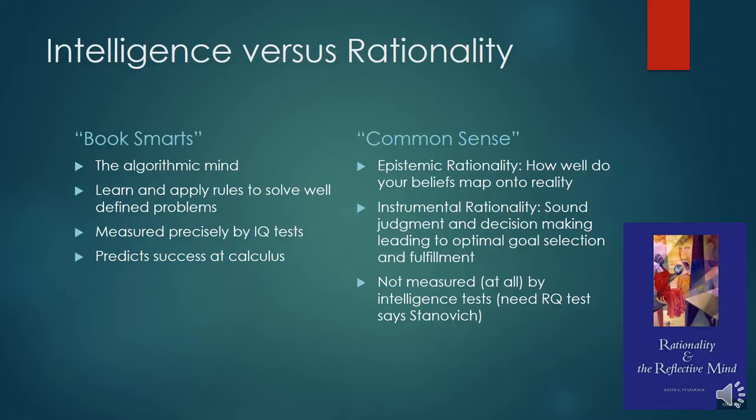Common sense is more related to rationality. Cognitive psychologists describe two flavors of rationality. The first is epistemic rationality — how well a person's beliefs map onto reality. The second is instrumental rationality, which is using those maps of reality to make sound judgments and decisions to select and fulfill goals optimally. This kind of rationality is not measured at all by intelligence tests and is weakly correlated with all components of intelligence. Stanovich argues for a rationality quotient test to measure it.